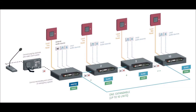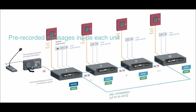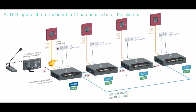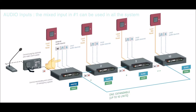In this system our first unit will be called master unit and the rest will be slaves. All of them are independent devices with their pre-recorded messages inside each unit. There will be one global analog input connected to our master unit.